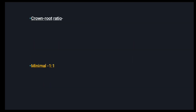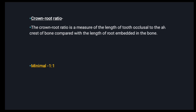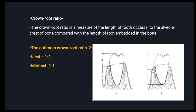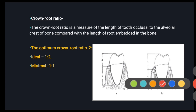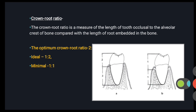Next is crown-root ratio — very important. Crown-root ratio is a measure of the length of the tooth occlusal to the alveolar crest of bone, compared with the length of the root embedded in the bone. Here you can see the alveolar crest of the bone.